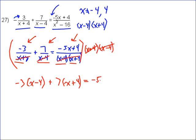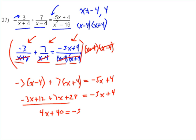Do the distributive property, you get -3x + 12 + 7x + 28 equals -5x + 4. Simplify this left side, you're going to get 4x + 40 equals -5x + 4.